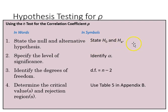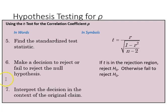These are the steps for constructing our hypothesis test: first, we state our null and alternative hypothesis specifying direction; we specify our level of significance alpha and degrees of freedom of n minus 2; we determine the critical value and rejection region from our table; next, we find our test statistic using the equation shown; and then we make our decision to either reject or fail to reject the null hypothesis, and interpret our decision in the context of the original claim.